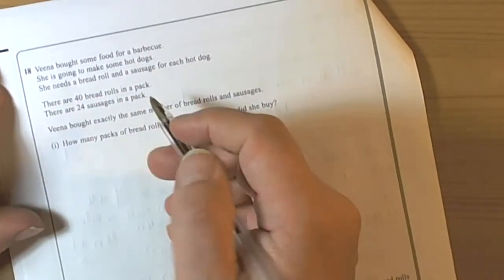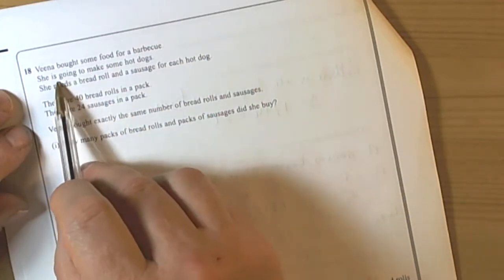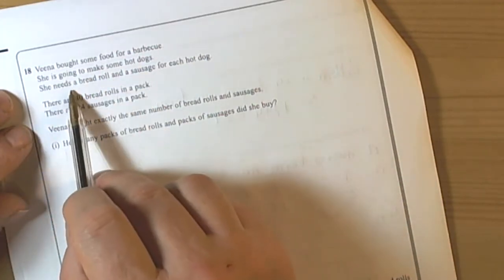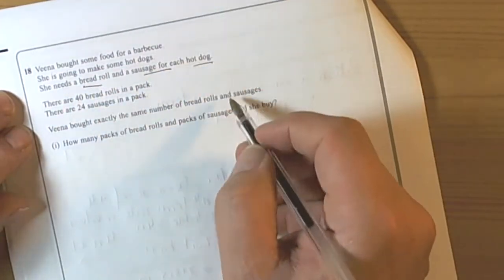This question's got lots of information so we need to be clear what we're doing. She's going to make some hot dogs. She needs bread, so she needs a bread roll and a sausage for each hot dog.